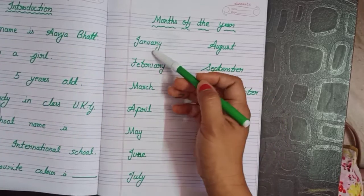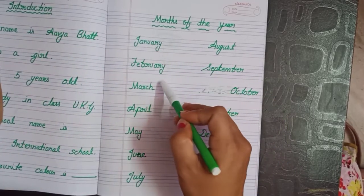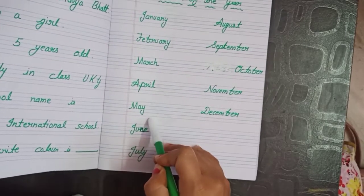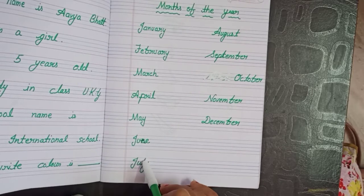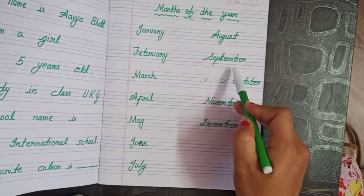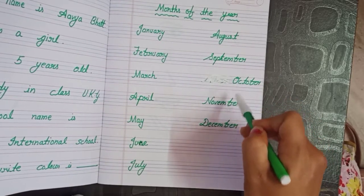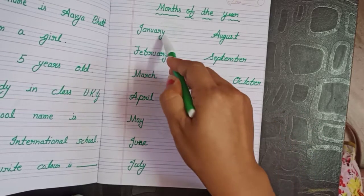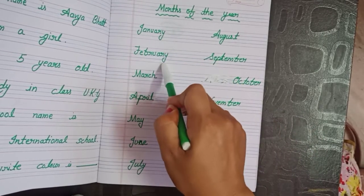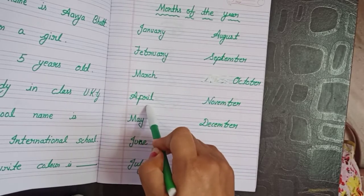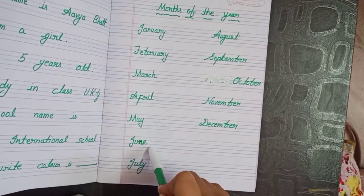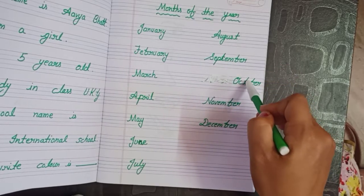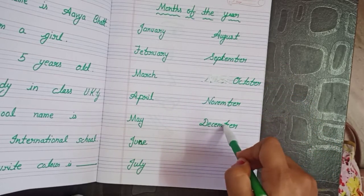Now let's start: January, February, March, April, May, June, July, August, September, October, November, December. Let's read again: January, February, March, April, May, June, July, August, September, October, November, December.